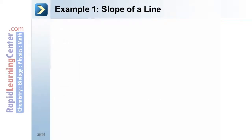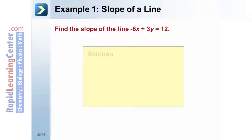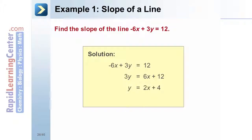Example 1 — slope of a line: find the slope of the line negative 6x plus 3y equals 12. Solution: convert to slope-intercept form by isolating y. Add 6x to both sides to get 3y equals 6x plus 12. Divide both sides by 3 to get y equals 2x plus 4. The slope of the line is 2.